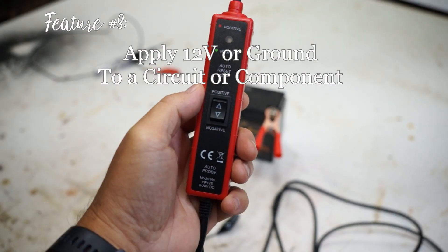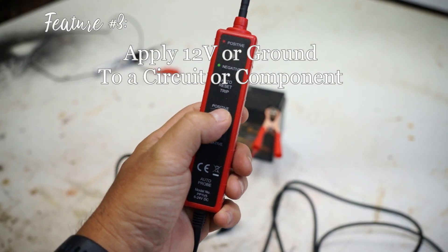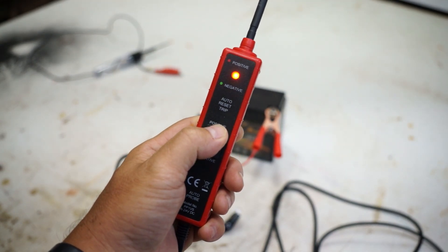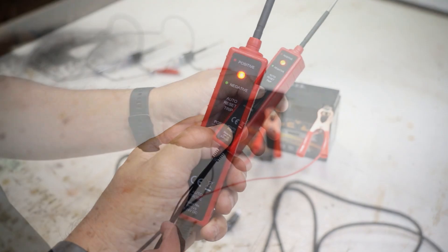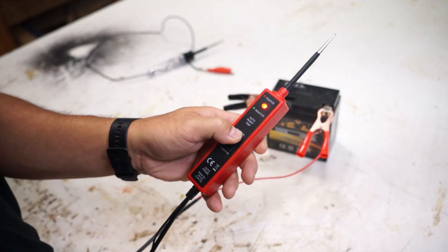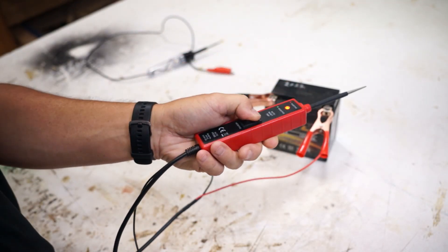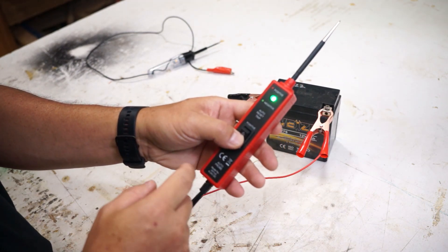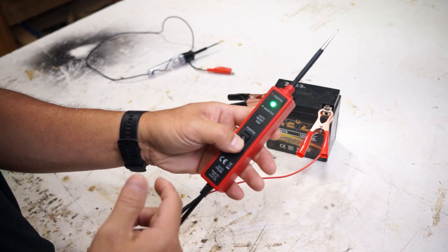For the third feature of the power probe, this has a little button right here. You push up for positive and you get a red line. Now what this is doing is sending 12 volts to the tip. So whatever you touch it will add 12 volts to it. If you push down on the button you get a green light and that's showing that you can test for ground in the circuit.